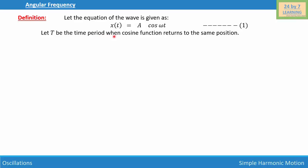Let T be the time period when the cosine function returns to the same position. In other words, let us consider T as the periodicity of the cosine function, which